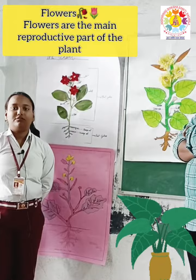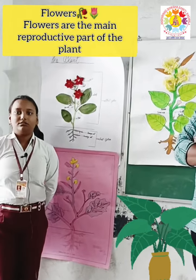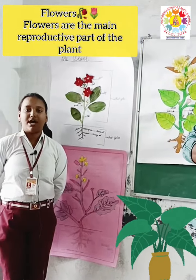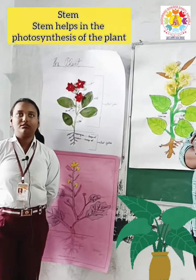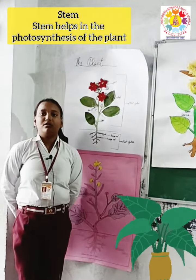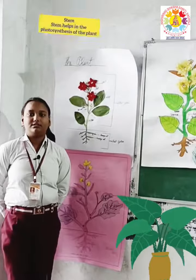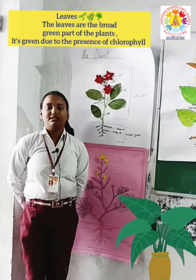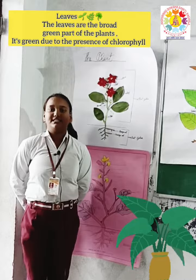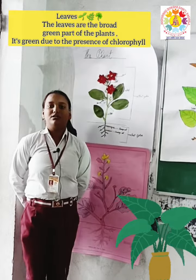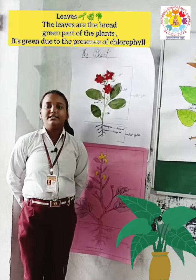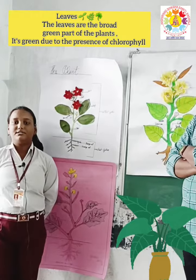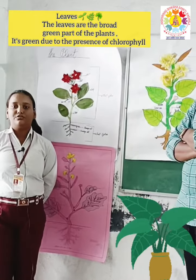Flowers are the main reproductive part of the plant. The stamen helps in the purposes of this. The leaf is a main broad part of the plant. It is green due to the presence of chlorophyll.